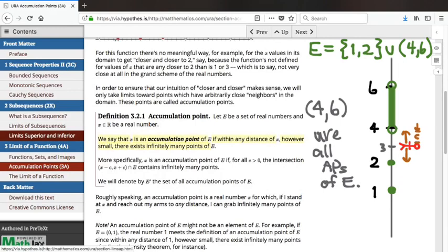But what real number is an example of a real number which doesn't belong to E, but which is an accumulation point of E? Where can I stand on this number line, which is not an element of E, but from which I can reach infinitely many points of E, no matter how short my arms are? 4. That's an example of an element of the real numbers. It's not an element of E, but it is an accumulation point of E.